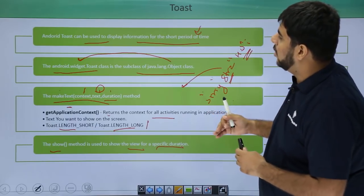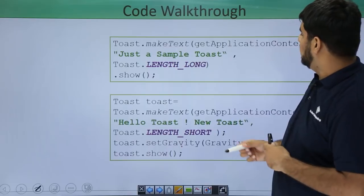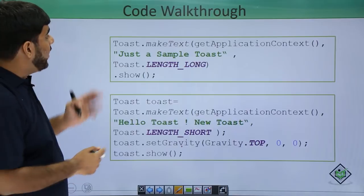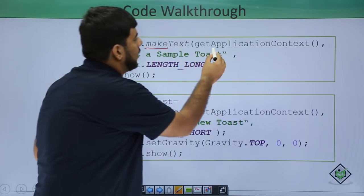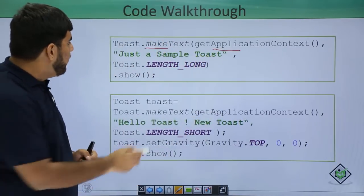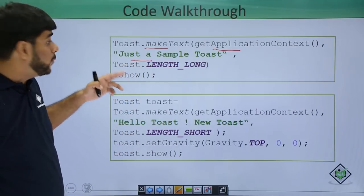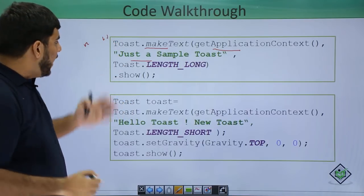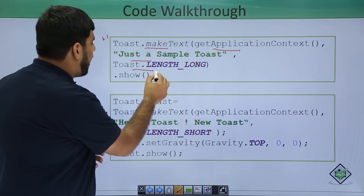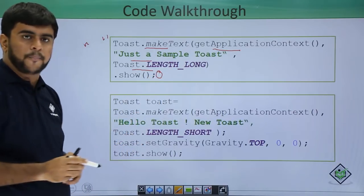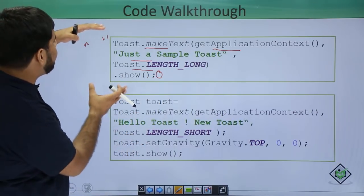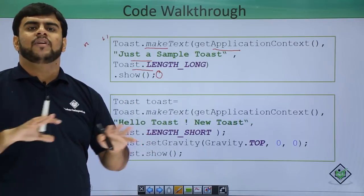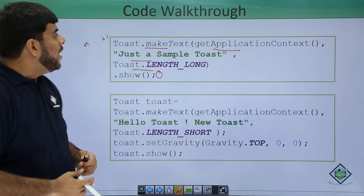Let's have a quick example. This is a toast example wherein we have made a toast and we are making the text out of it, we are getting the context from the toast and we are passing some text. You can see that I am using a text in double quotes the way we pass strings in Java and then I am giving the length as length long and I am passing the show.